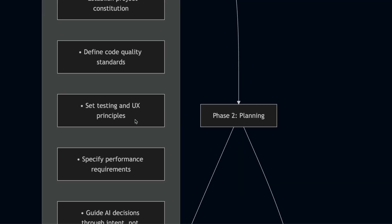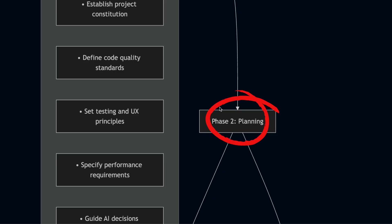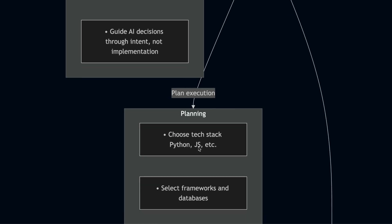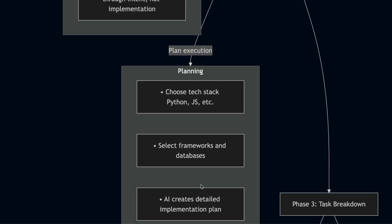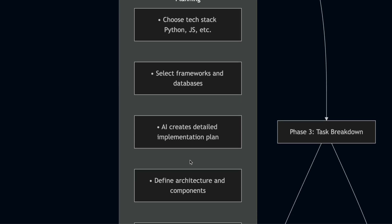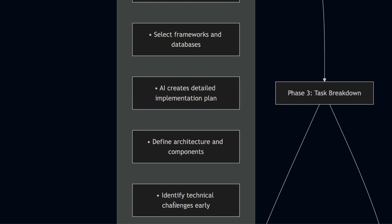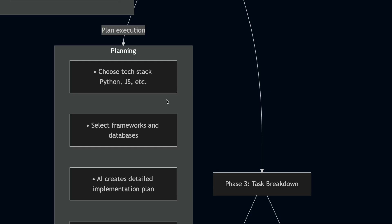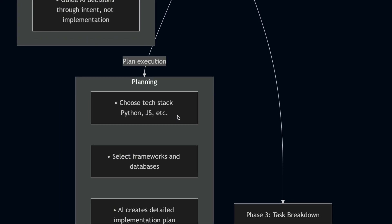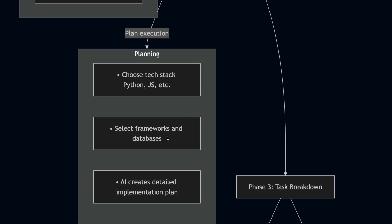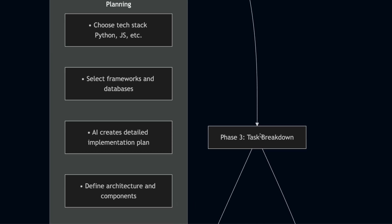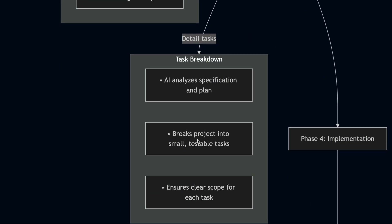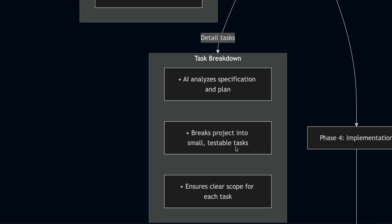After your specification is solid, you move into the planning phase. This is where you finally get to talk about the technical stack. You tell the AI whether you want to use Python or JavaScript, whether you prefer a specific framework, and what kind of database makes sense for your use case. The AI takes your specification and technical preferences and creates a detailed implementation plan, maps out the architecture, identifies the components you will need, and thinks through potential technical challenges before any code gets written. Next comes the task breakdown phase.